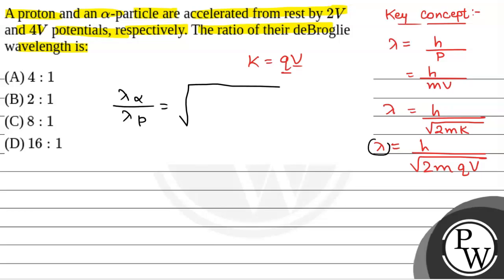As we can see, de Broglie wavelength is inversely proportional to root over mass into charge into potential. So that will be equal to root over mass of proton into charge of proton into potential V1 divided by root over mass of alpha particle into charge on alpha particle into potential V2.